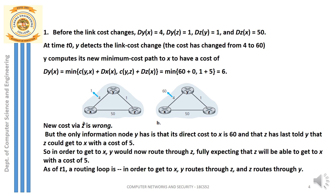Before the link cost changes — the first scenario — the distance from y to x is 4. The distance from y to z and z to y is 1 each. From node z to node x initially at t=0, the cost is 50. This is a direct path of 50. Then at t=0 the link cost reduces from 4 to 1, which we have already discussed.